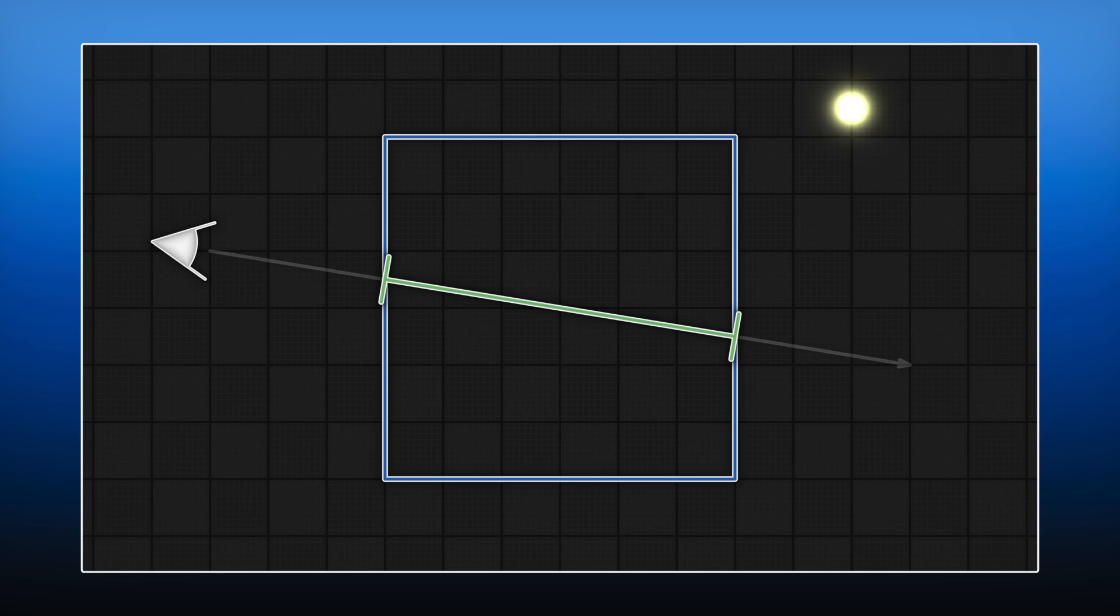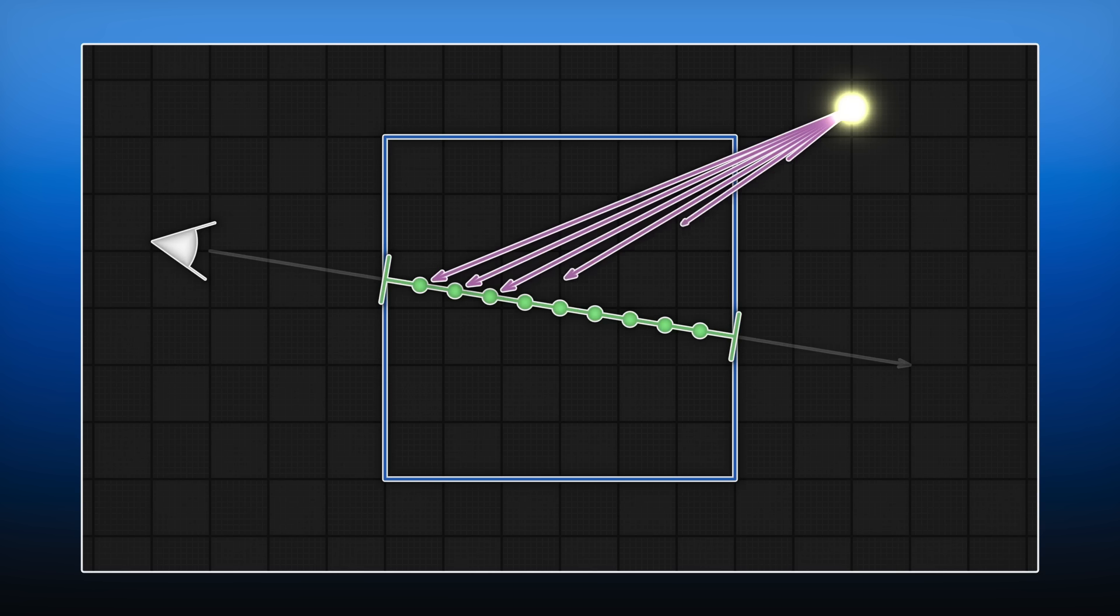So if you have a light source up here, at each of these points along this path that you're sampling, you need to figure out how much light energy is there by the time you get to that point. And similar to before, since the medium isn't uniformly dense, what you need to do is starting from each point along here, you need to do a second set of samples towards the light source.